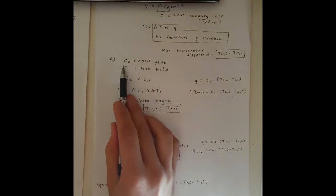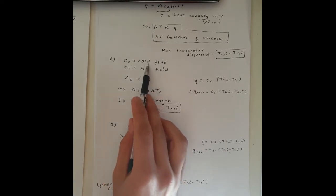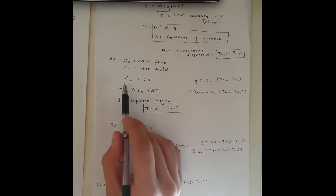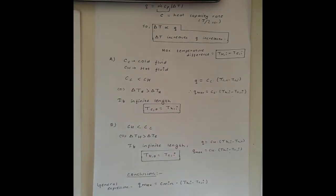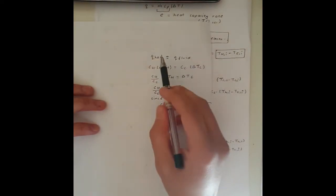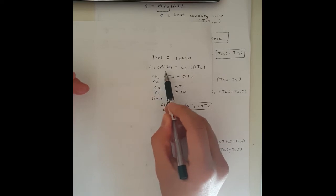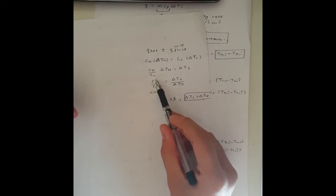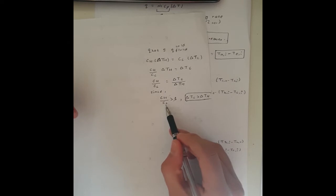To determine which fluid experiences the maximum temperature difference, it depends on the heat capacity rate. CC is the heat capacity rate of the cold fluid and CH is that of the hot fluid. Consider the case where CC is less than CH. We can derive, using conservation of energy, that the temperature difference for the cold fluid will be greater than the temperature difference for the hot fluid.